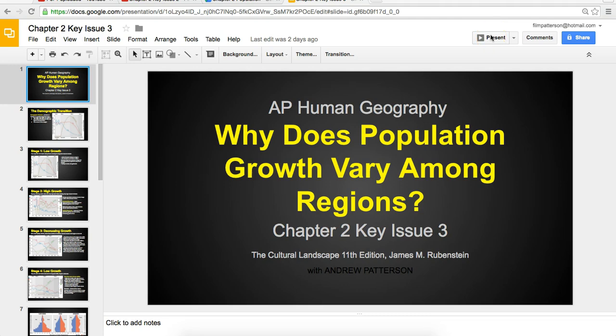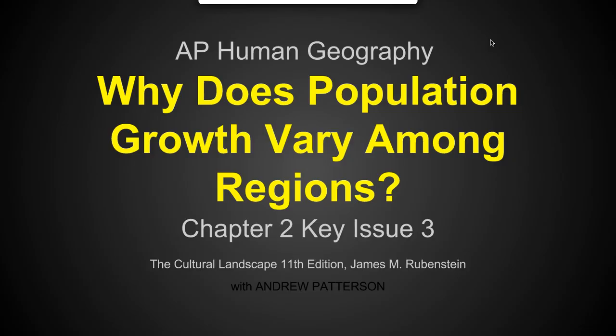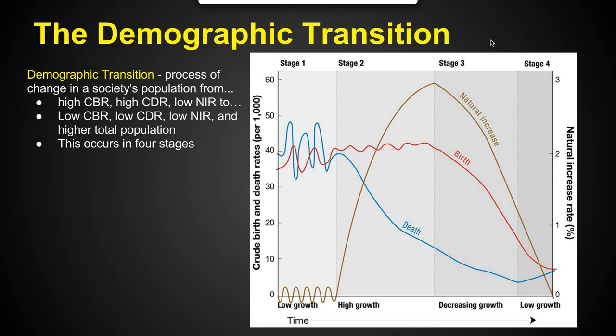Welcome to Chapter 2, Key Issue 3: Why does population growth vary among regions? Why do certain regions grow and others don't? In order to discover that, we're going to look at the demographic transition model.